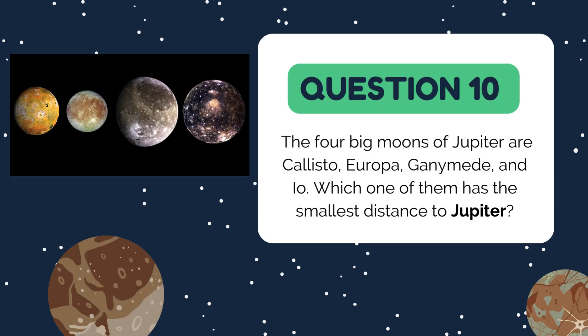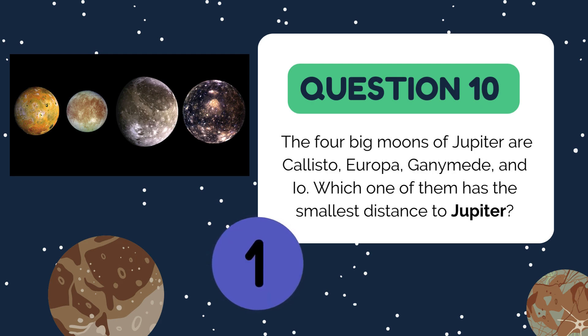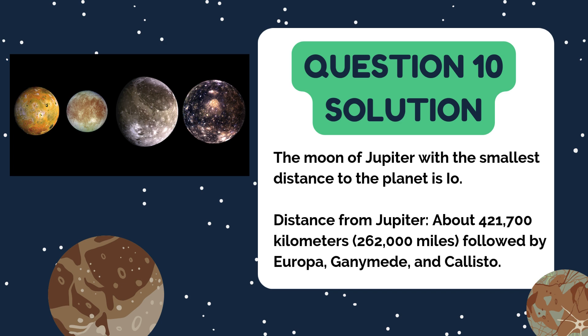Let's finish with a challenge. The four big moons of Jupiter are Callisto, Europa, Ganymede, and Io. Which one of them has the smallest distance to Jupiter? The answer is Io. Io is the closest of the Galilean moons, orbiting at about 421,700 kilometers (262,000 miles) from Jupiter. Its proximity subjects it to extreme tidal forces, making it the most volcanically active body in the Solar System.